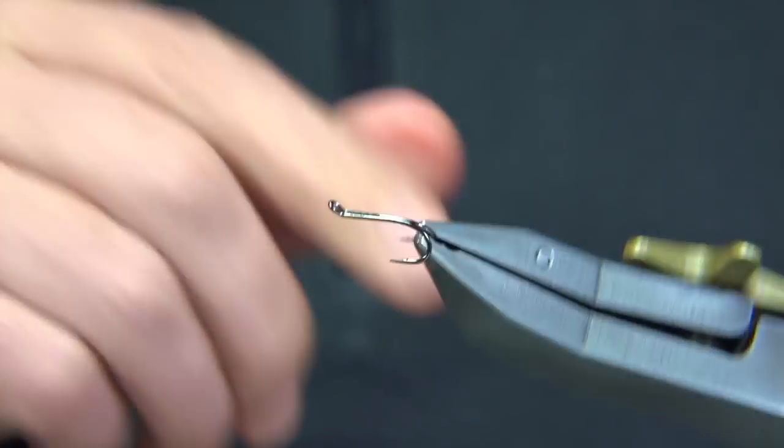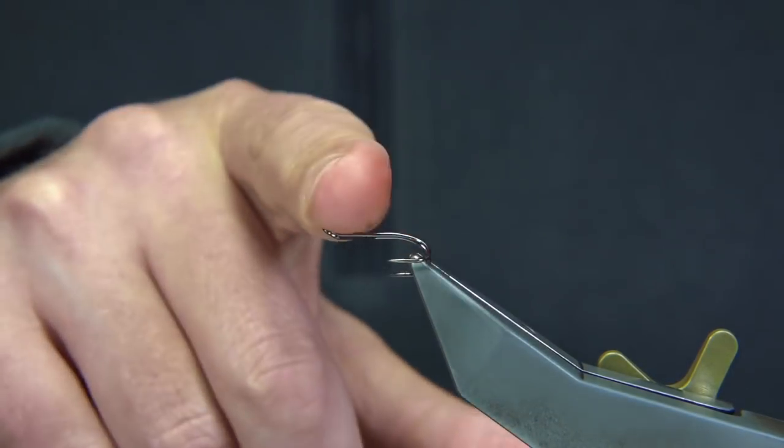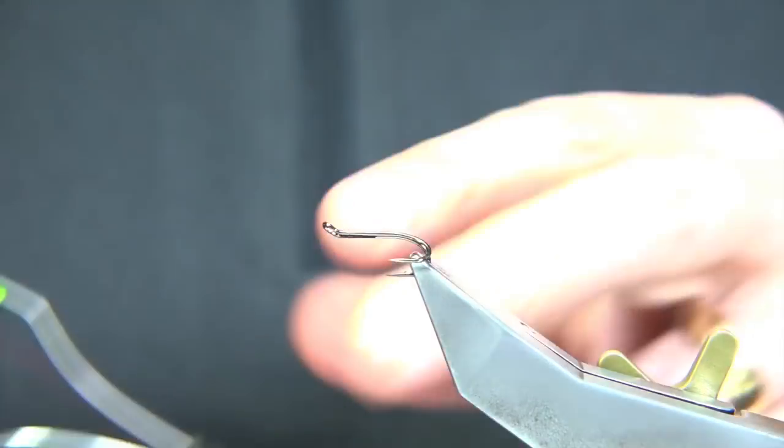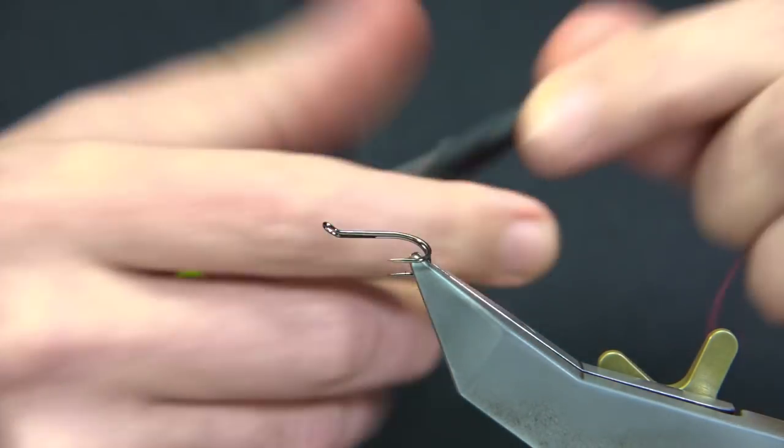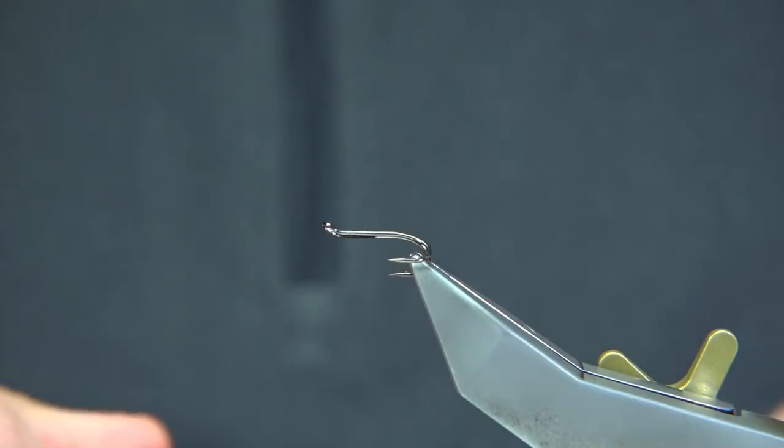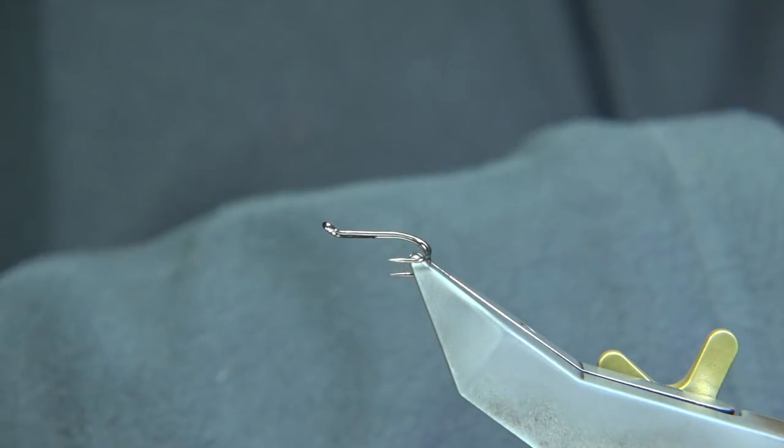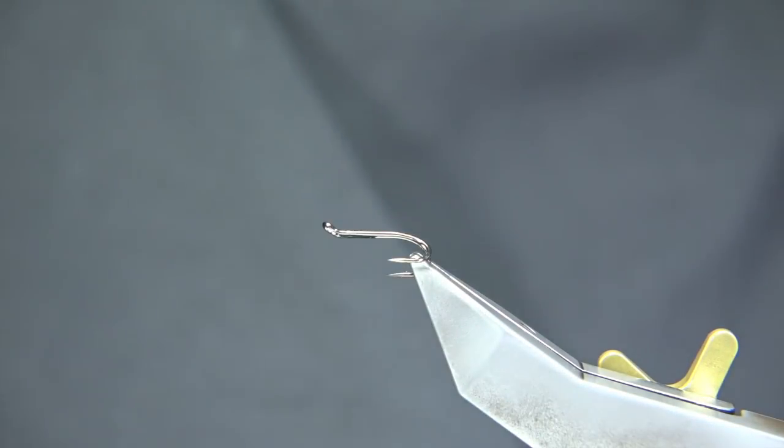So I'm going to show you how to tie it. The hook I'm using, this is a Mustard size 10 double. Thread I'm going to be using, unithread in A0 and obviously red. First thing I'm going to do is put my glasses on so I can see.